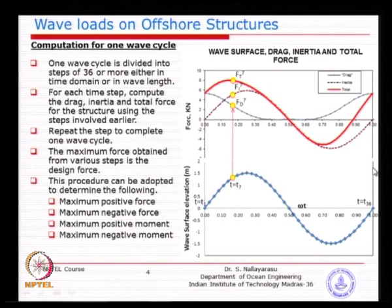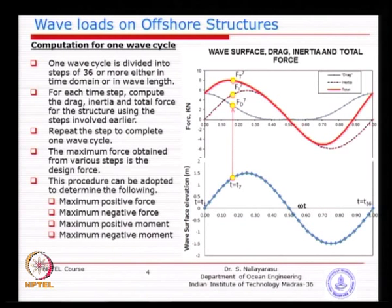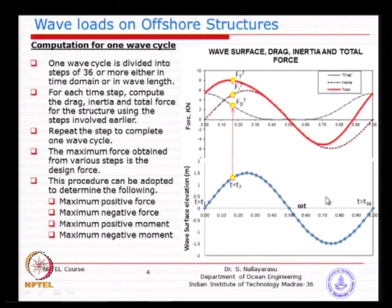This Ft corresponds to one particular time step; repeat for several time steps and you get such a plot. You can see the variation - the dotted line shows the inertia component, the blue line shows the drag force, and the summation is shown in red. That is the profile of total force variation from T equal to 0 until one wave cycle is completed. For the next wave cycle, we do not need to repeat because using a simple regular sine or cosine wave it is going to be repetitive.